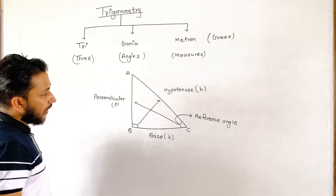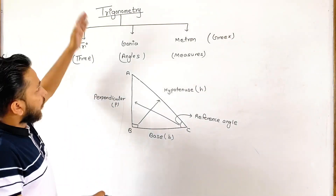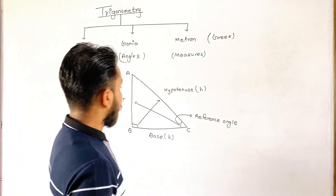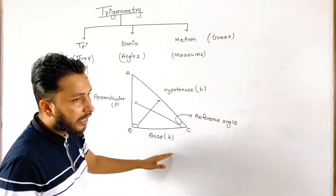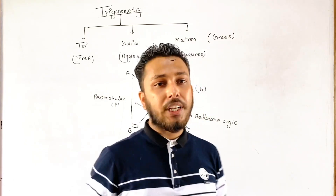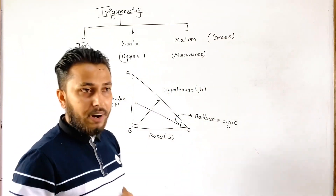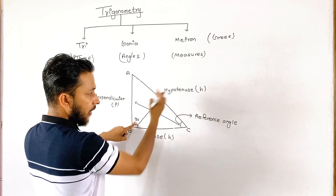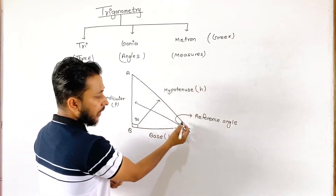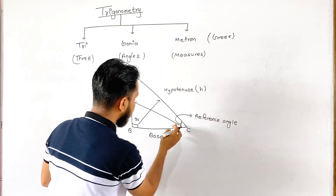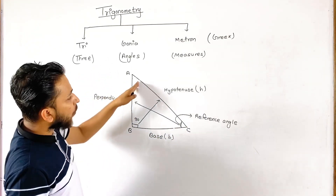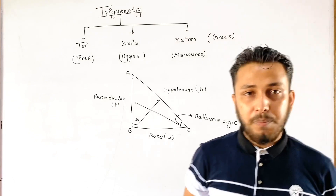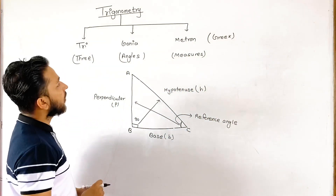The base is represented by small P. Now, trigonometry is the branch of mathematics which especially deals with the three sides: hypotenuse, perpendicular, and base. Trigonometry also deals with the three angles of the right angle triangle. The first angle is the right angle equaling 90 degrees; its opposite side is the hypotenuse. The second is the reference angle, whose opposite side is the perpendicular. The third remaining angle's opposite side is the base. This concept is fundamental when beginning to learn trigonometry.